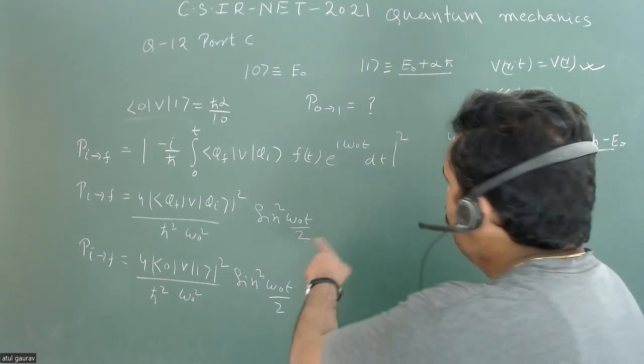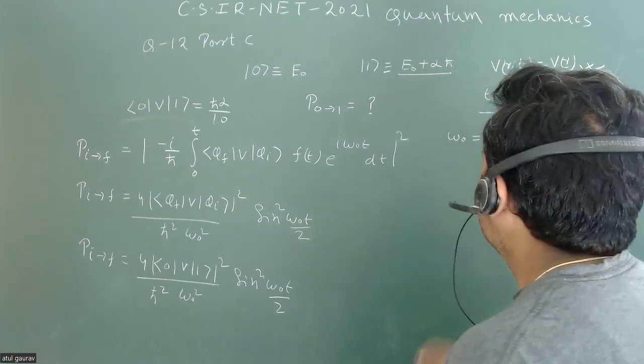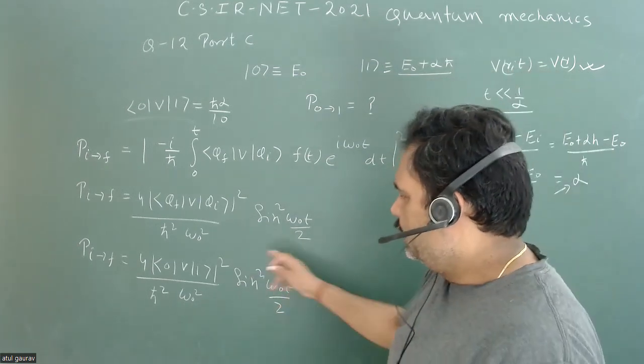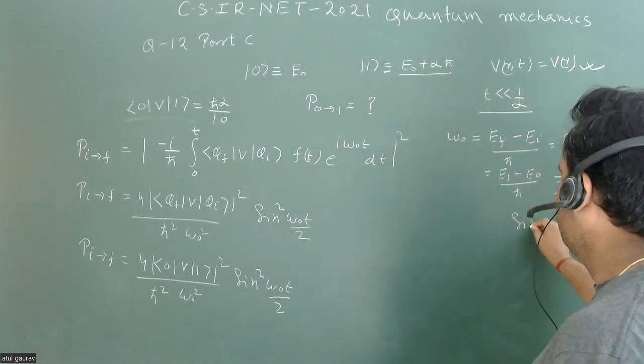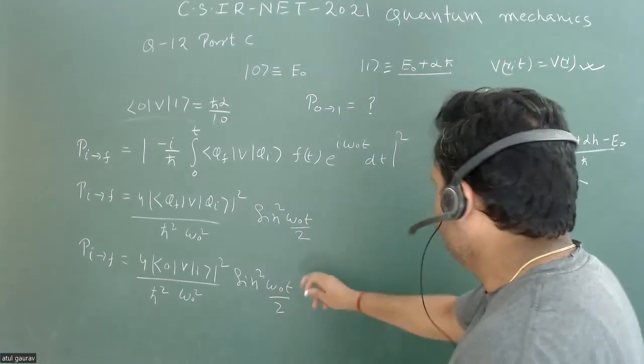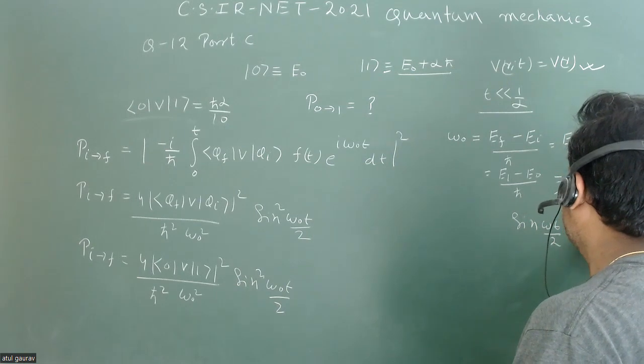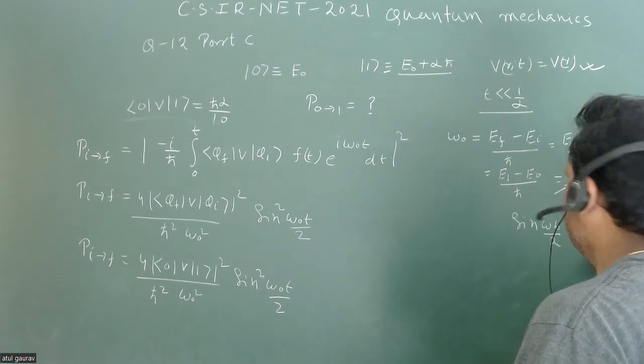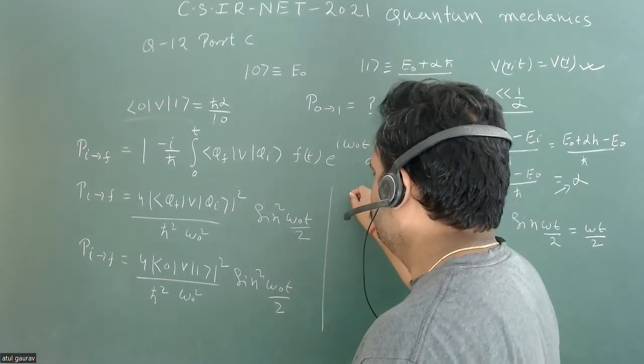We can easily calculate now, but we have to take care of this particular statement. We can easily reduce this sine square. We all know for small angles, if ωt/2 is very small, then sin(ωt/2) can be written as ωt/2. So this formula is again reduced.